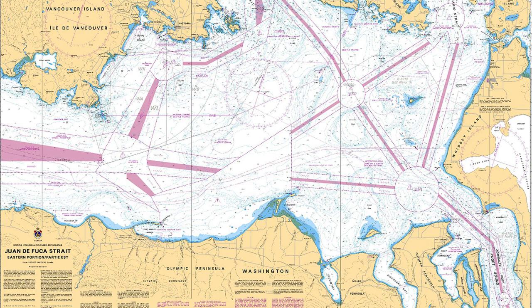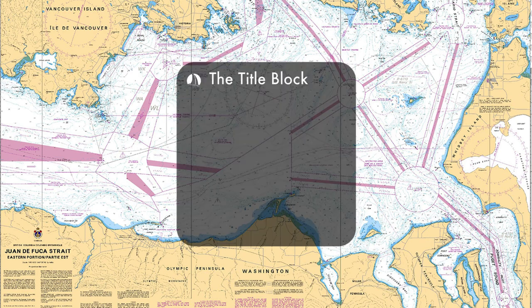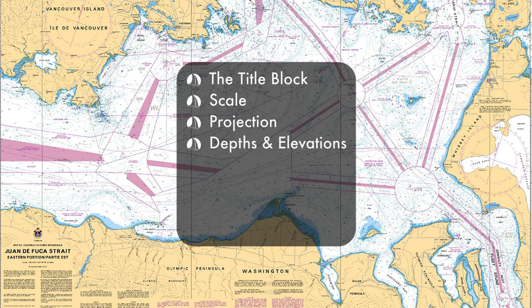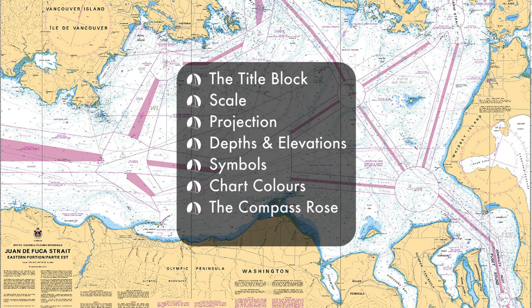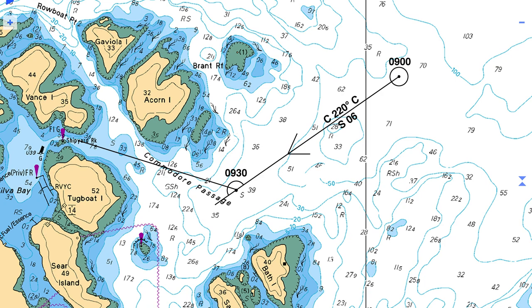I will be covering the following information found on the chart: the title block, the scale, the projection — which is how a round sphere is interpreted on a flat surface — depths and elevations as they relate to tide tables, symbols, abbreviations and terms, including depths or soundings as they're correctly called, what the different colors mean, the compass rose, and finally I will touch on digital charts. Plotting will be the subject of a future video.